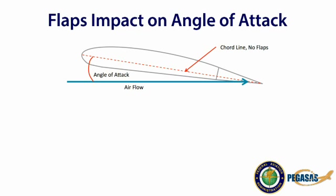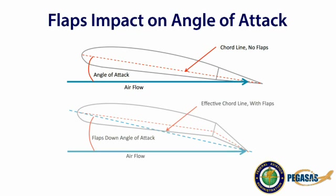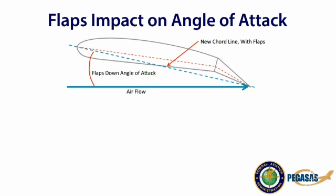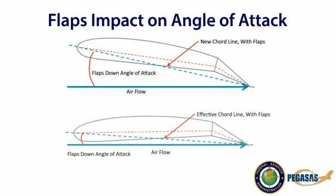This is a wing with the flaps in the retracted position. When the flaps are extended, it changes the effective chord of the wing, which increases the angle of attack and results in a momentary increase in lift. To compensate for this new chord line, the pilot will normally adjust the elevator pressure to dissipate this momentary increase in lift to maintain altitude. The result is that an aircraft with deployed flaps can produce the same lift at a lower angle of attack until the descent profile is initiated.